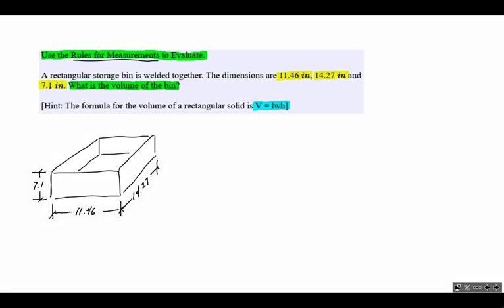And if we use this formula that we're given in the hint, it's a pretty straightforward problem, isn't it? We're just going to multiply these three numbers together and get an answer. But first, let's talk about rules for measurements.